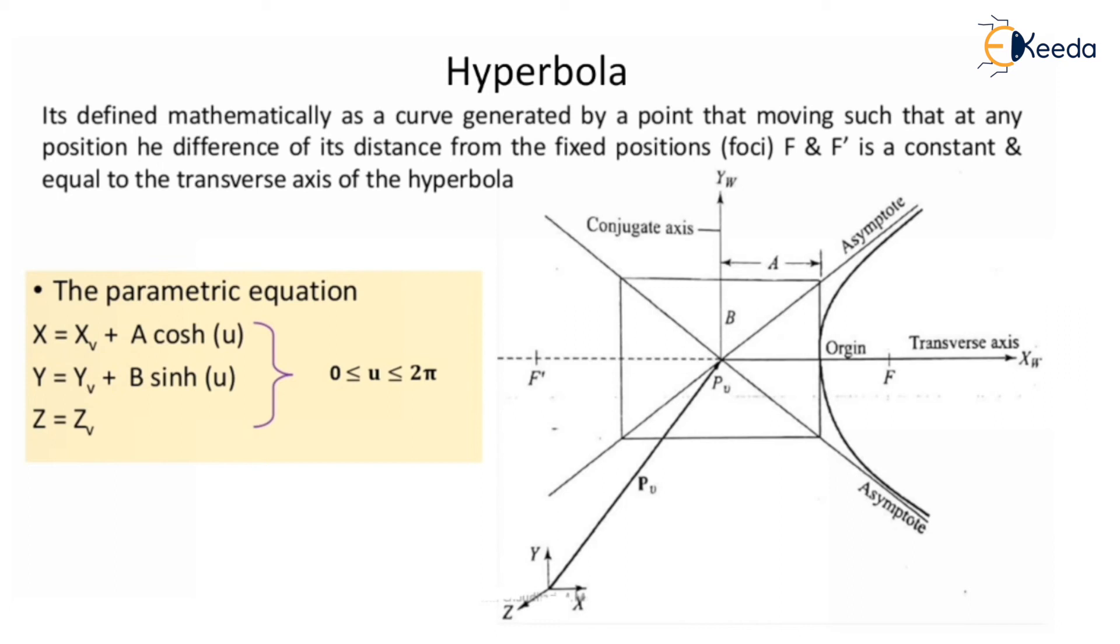The parametric equation for hyperbola will be X = Xv + A cosh(u) and Y = Yv + B sinh(u), which are hyperbolic functions. Z = Zv, and u will be between 0 and 2π. Remember these two curves, as most of the time these curves...